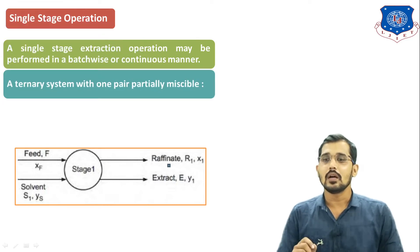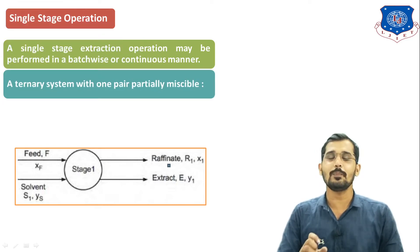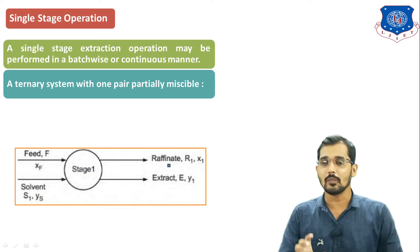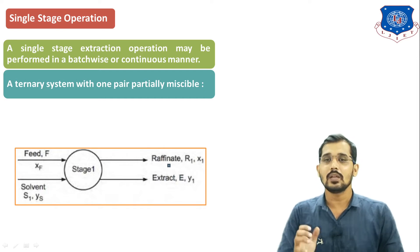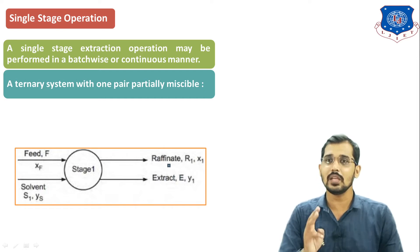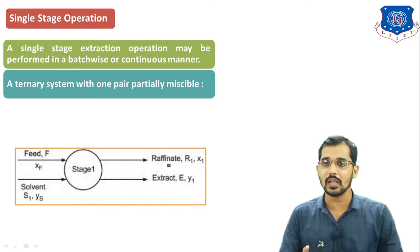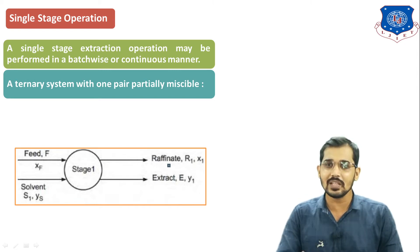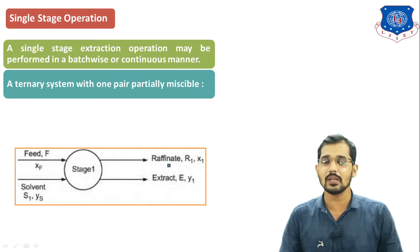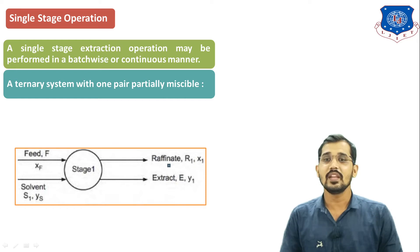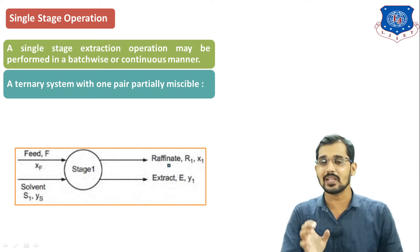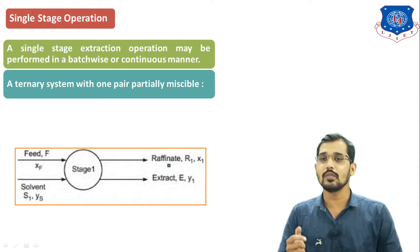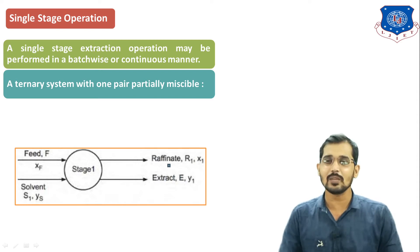The second point is a ternary system with one pair partially miscible. A ternary system means a system having three components: component A is the feed solvent, component B is the extracting solvent, and component C is the solute which we want to extract from the feed solution. One pair is partially miscible — that pair is the extracting solvent and the solute which we want to extract from the liquid solution.